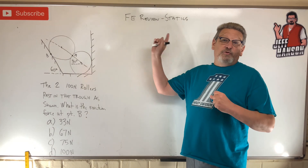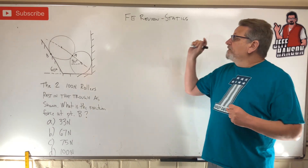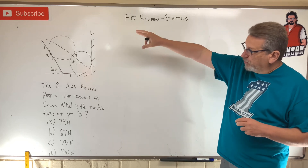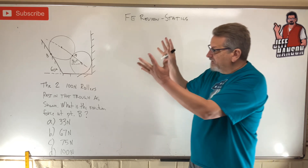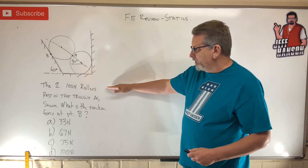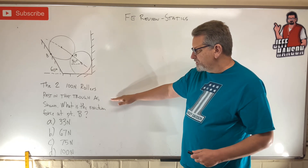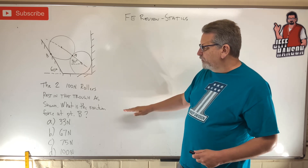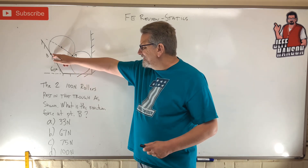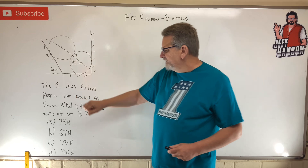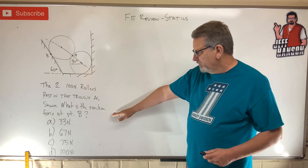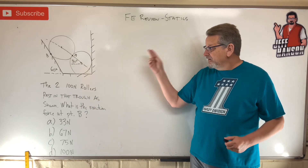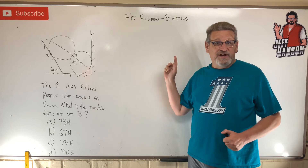Welcome back to the review problem in statics. We've got two rollers in a trough — an angled trough. The two 100 Newton rollers rest in the trough as shown. What is the reaction force at point B, where this roller presses on that wall? Here are your choices — which one are you going to pick?